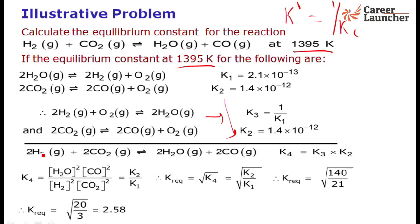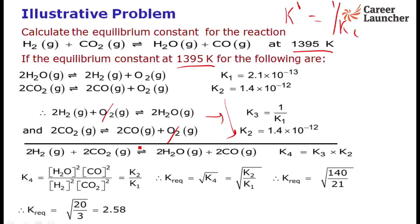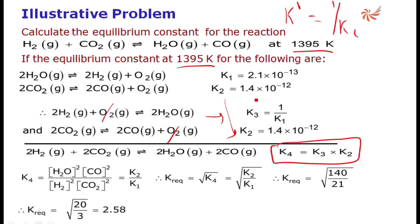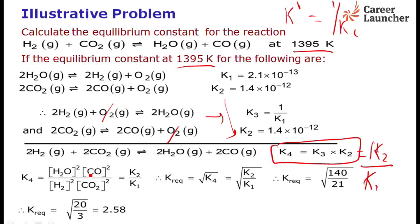For the reaction 2H₂ + 2CO₂ → 2H₂O + 2CO, we are adding the two reactions. Here 2H₂ + 2CO₂ and O₂ cancels out, giving 2H₂O + 2CO. When we add two reactions, the Kc for the combined reaction is the product of the previous two Kc values. So K₄ = K₃ × K₂ = K₂/K₁. The concentration of H₂O raised to the power 2 and CO raised to the power 2 gives K₄ = K₂/K₁.